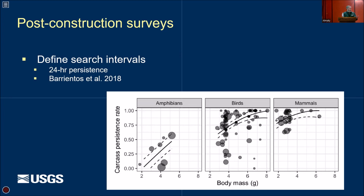The other part of the experimental design is defining your search interval. Data show that over a 24-hour period, the smaller the carcass, the less likely it is to persist. In the USA, many surveys are done at 30-day intervals, meaning you'll lose most of your small carcasses — you won't detect them. Defining this search interval is really important for your experimental design.